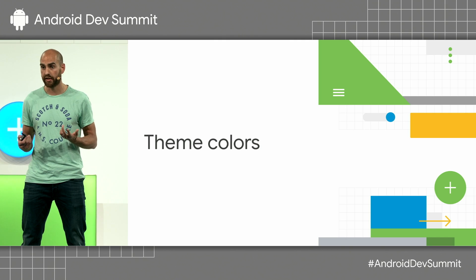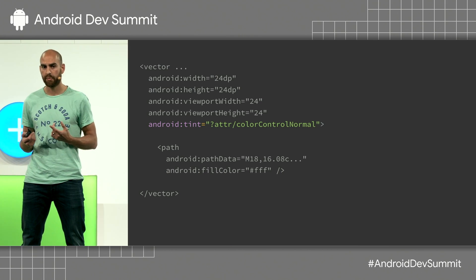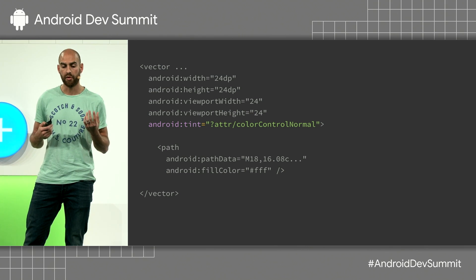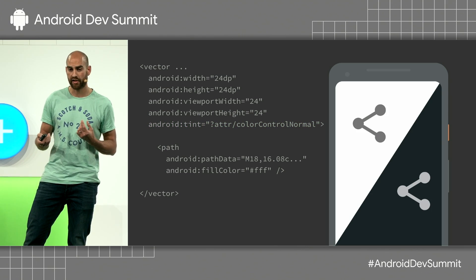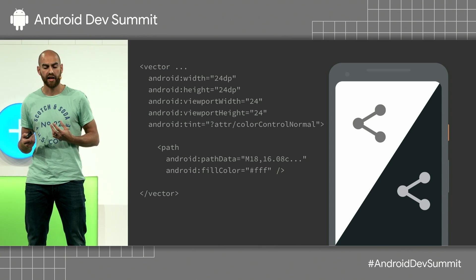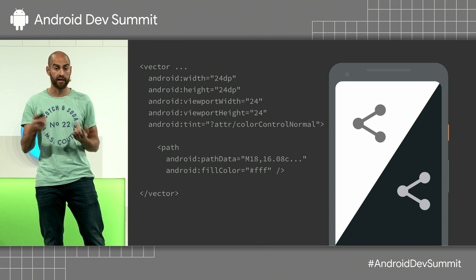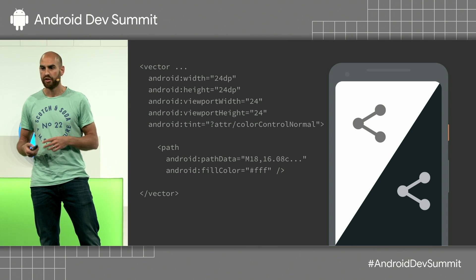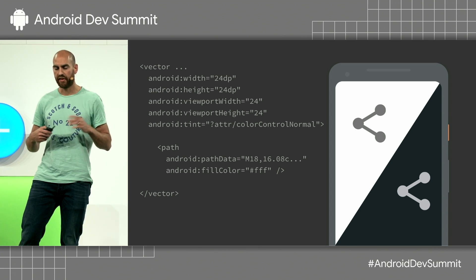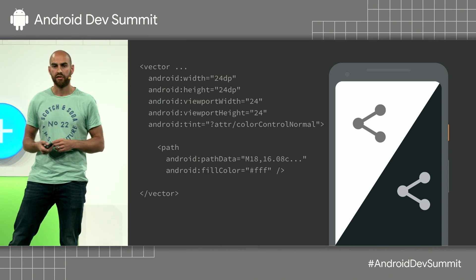The first thing is using theme colors. You can use theme colors in two ways. The first is by applying a theme color as a tint — this will tint the entire drawable based on the current theme. Here I'm using the theme attribute color control normal, which is the normal color for icons. So you can have one single asset which displays in different themes, say a light screen or a dark screen, and it gets tinted to be the right color. You no longer have to worry what color asset you got from your designers in the SVG — it will be tinted at runtime, so it is always correct.